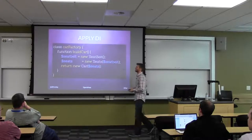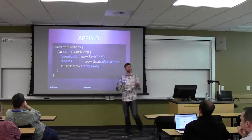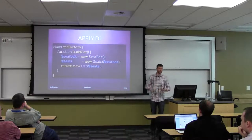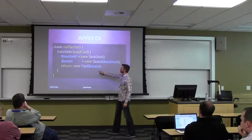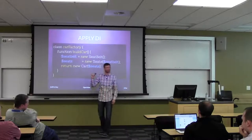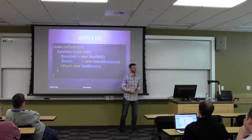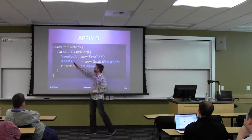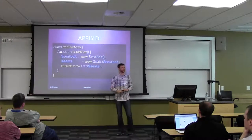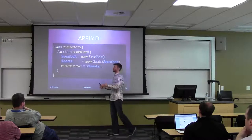With dependency injection, you have a similar scenario but handled differently. You have a factory class with a build car function that gets the seat belt, the seats, the car, and returns a new car object. You only have to pass one thing in because the car doesn't need to know about the seat belt, doesn't care about the number of seats. You can extrapolate further — what kind of buckle is on that seat belt doesn't matter to the car. We're obeying the Law of Demeter by not passing stuff the car doesn't need to know. This becomes super handy when testing because it allows you to test just the unique parts of your code.